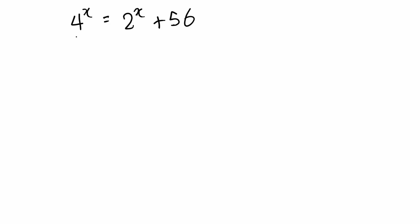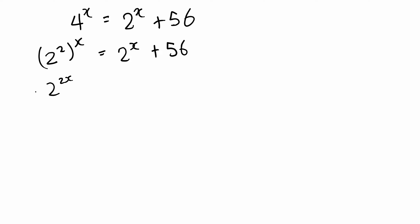How can we simplify 4? We can write it as 2 squared, all multiplied by x. Because 2 squared is 4, and 4 to the power of x — when we multiply powers, we add them. So 4 to the power of x equals 2 to the power of 2x, and that equals 2 to the power of x plus 56. Then we rearrange, moving everything to the left side: 2 to the power of 2x, minus 2 to the power of x, minus 56, all equal to 0.